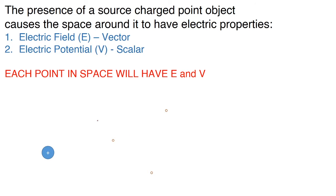To summarize: the presence of a source charge causes the space around it to have electric properties. The space will have both electric field, which is a vector, and electric potential, which is a scalar. Each point in space will have both an E and a V value.